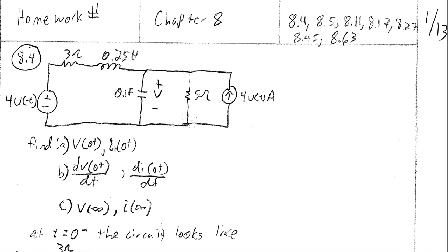We're asked to find several things here: our initial conditions on the voltage and the current — the current is going to be through the inductor from left to right. So we're looking for I at zero plus, immediately after this transition has occurred — turning on this current source, turning off this voltage source. We're looking for I(0⁺), the current through the inductor, and V(0⁺), the voltage across the capacitor. We also want the derivatives of both quantities at t=0⁺, and the final steady-state values V(∞) and I(∞). To inform what's happening at zero plus, we look at what happens at t=0⁻.